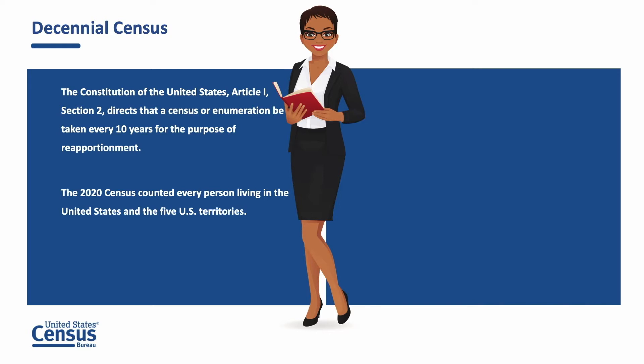Article 1, Section 2 of the Constitution directs that the census or enumeration be taken. So every 10 years, starting with the first census in 1790, the U.S. Census Bureau conducts a census once, only once, and in the right place to determine the number of people living in the United States for the purpose of reapportionment.